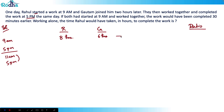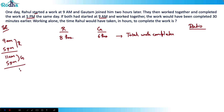So when Rahul works for eight hours and Gotham works for six hours, the total work gets completed. Now for the next part: if both had started at 9am and worked together, the work would have been completed 30 minutes earlier — that is, at 4:30pm.